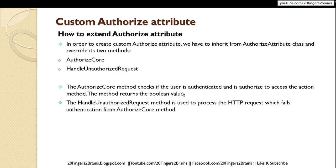HandleUnauthorizedRequest is used to process the HTTP request that fails authentication from the AuthorizeCore method. So when authentication or authorization fails from AuthorizeCore, this function is called. Here you can process the HTTP request — for example, redirect the user to a particular view if the user is authenticated but not authorized, and handle different scenarios.